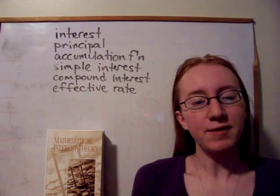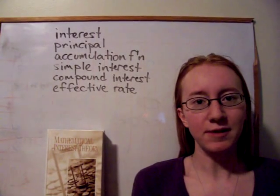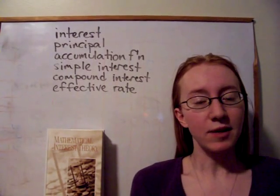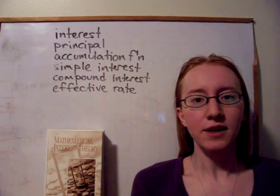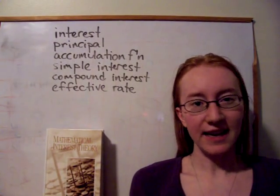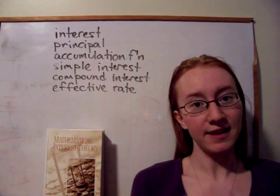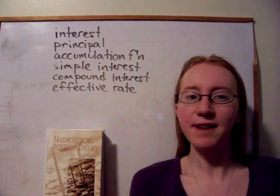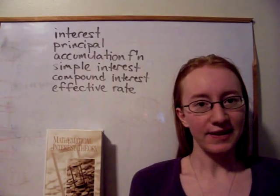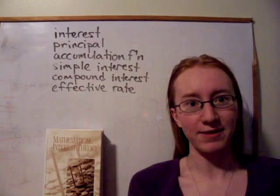The last definition from this week was an effective rate, which is a way of comparing possibly two different accounts or two different investments by looking at the effective interest rate in a common time period. An effective rate can be calculated over any time period — usually we use one year — and whether we're looking at continuously paid or discretely paid interest, it's always the amount of interest earned during that period divided by the amount in the account at the start of that period.